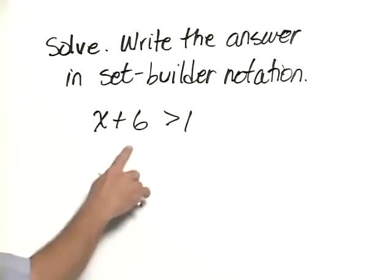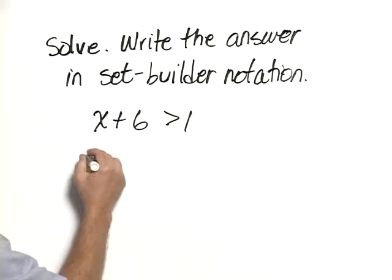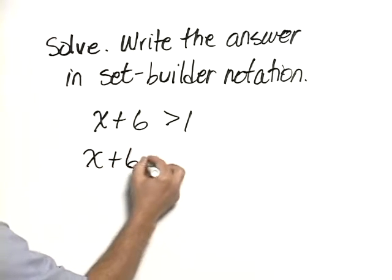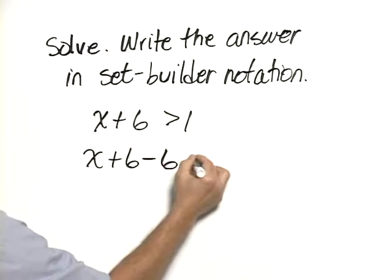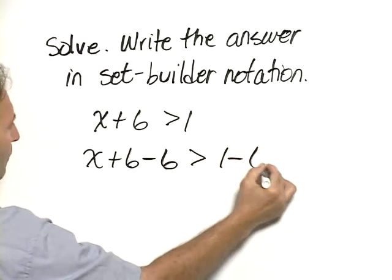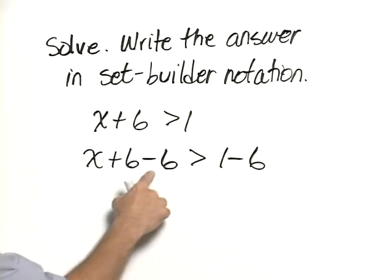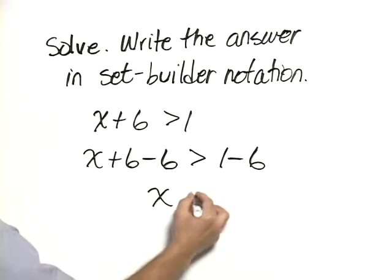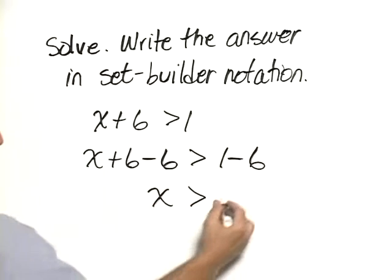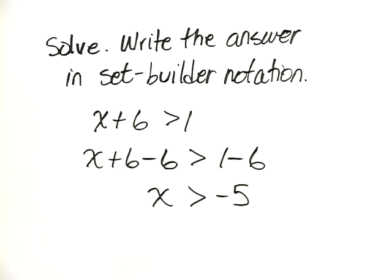We'll start this problem by subtracting 6 from both sides. So we have x plus 6 minus 6 is greater than 1 minus 6. 6 minus 6 is 0, so we have x is greater than negative 5.